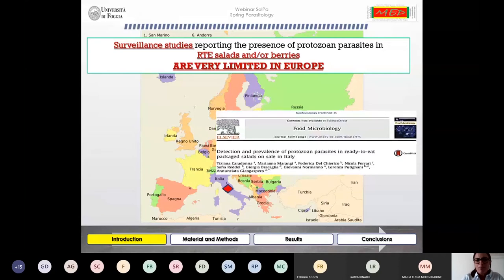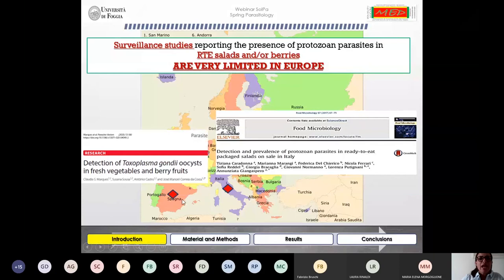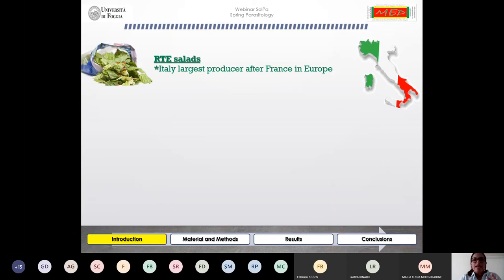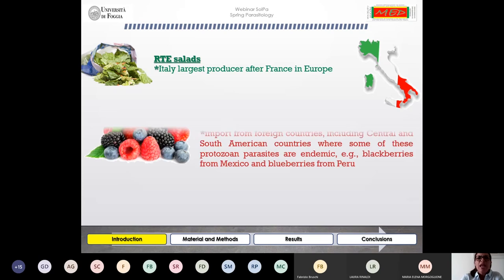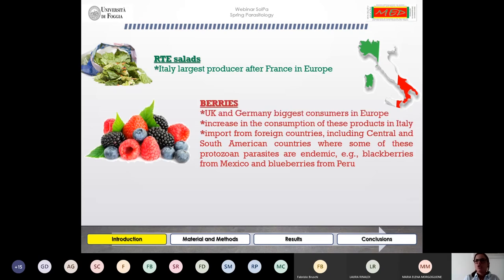There is a report published in 2017 in which the prevalence of protozoan parasites in ready-to-eat salads is reported in Italy, and also a very recent report in which the authors detect Toxoplasma gondii oocysts in fresh vegetables and berry fruits in Portugal and Spain. Italy is the second largest producer of ready-to-eat salads after France and also produces berries.